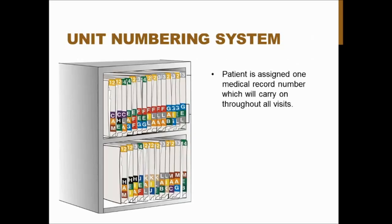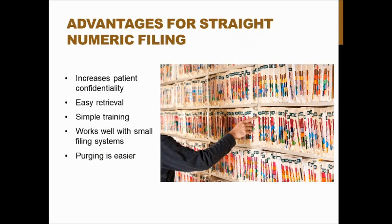With the unit numbering system, the patient is assigned only one medical record number that carries through all visits. This is the most common of the straight numerical filing systems. Advantages include increased patient confidentiality since records aren't filed by name, easy retrieval because numbers are in chronological order, and simple training since staff just need to know how to count.